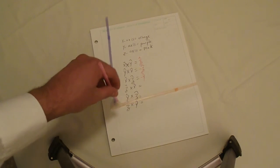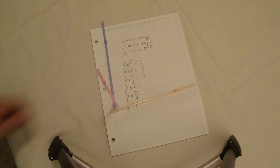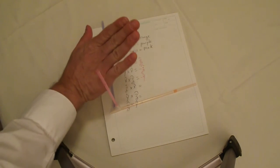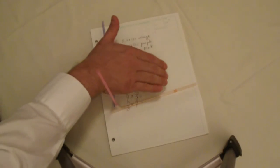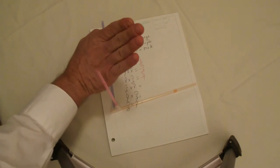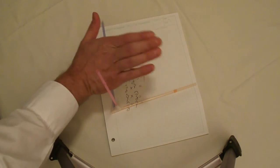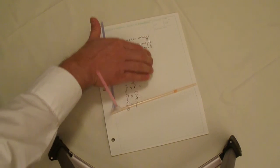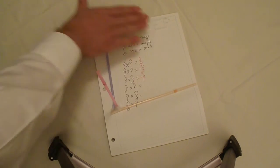Similarly, Z cross X: put your right hand adjacent to the pink — which is Z — and curl toward your X, the orange. You can see your thumb is pointing in the direction of the purple straw, which is the positive Y axis. So Z cross X equals positive Y-hat.